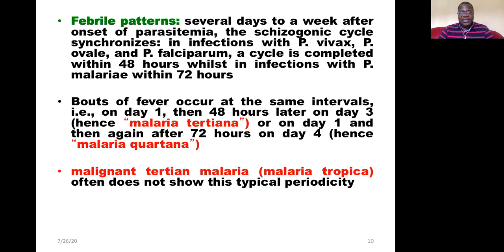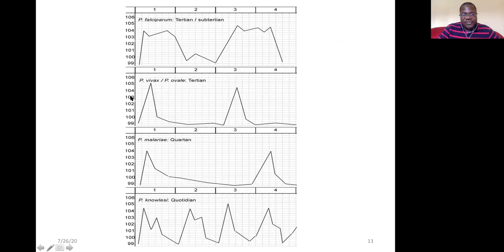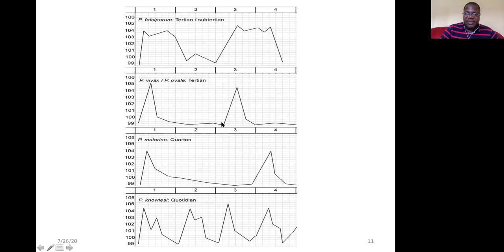Plasmodium falciparum also causes malaria tertiana, but it causes a malignant form called malaria tropica. When infected with Plasmodium vivax or ovale, you see a peak on day one, then complete remission until the next peak on day three — giving classic intermittent fever. With Plasmodium malariae, the second peak occurs on day four, which is malaria quartiana.